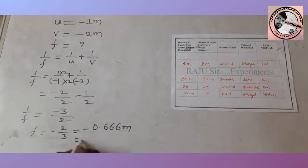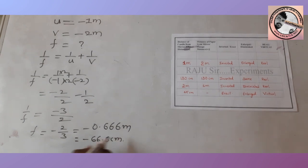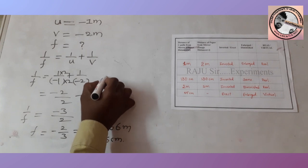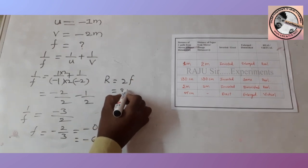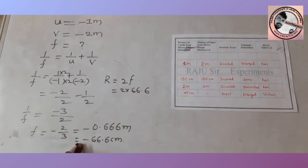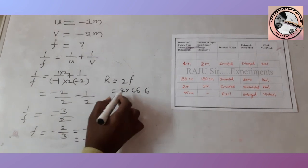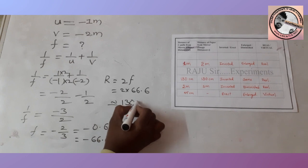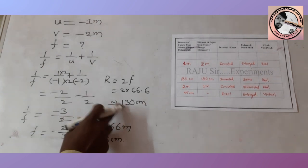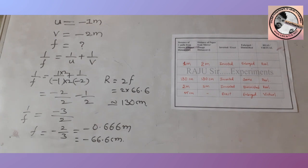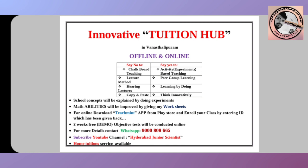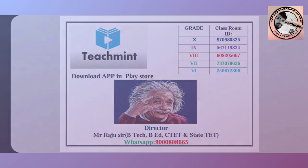So f = −2/3 meters = −0.666 meters. Converting to centimeters gives 66.6 centimeters. To verify: R = 2f, so 2 × 66.6 ≈ 130 centimeters. This matches our experimental observation that the center of curvature is at approximately 130 centimeters from the concave mirror. Thank you for watching this video — please subscribe and like the channel.